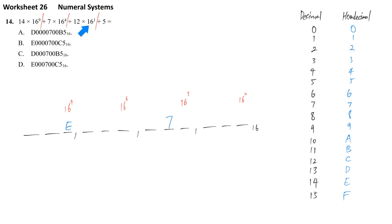And then we have 12 times 16 power 1, 16 power 0, 16 power 1 here. So this is 12 and then 12 is represented by C.